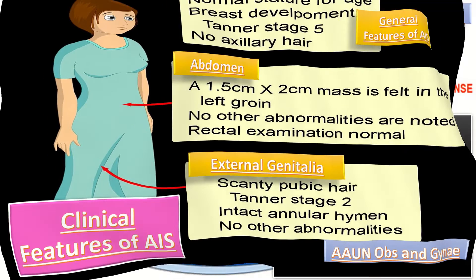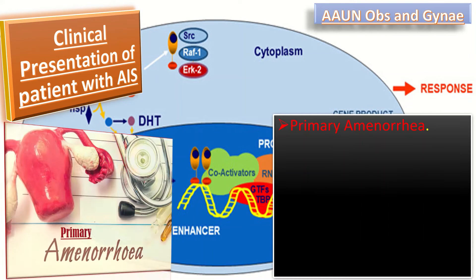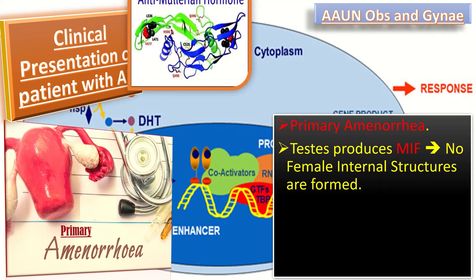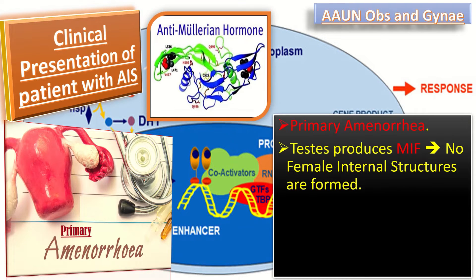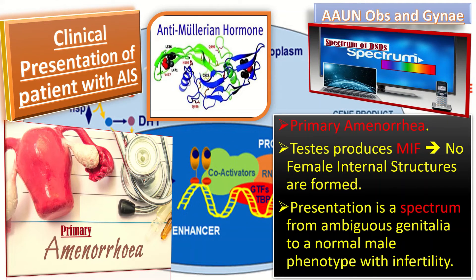Patients with AIS present with primary amenorrhea. The testes produce Müllerian inhibiting factor or anti-Müllerian hormone, so no female internal structures are formed. The presentation is a spectrum ranging from ambiguous genitalia to a normal male phenotype with infertility.